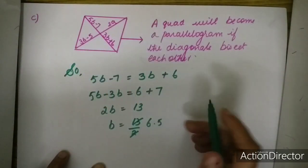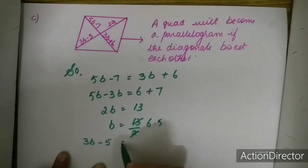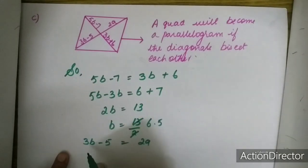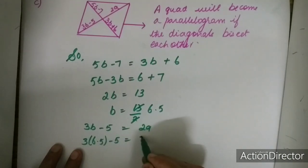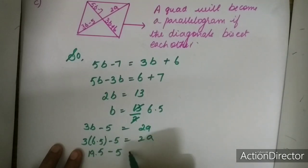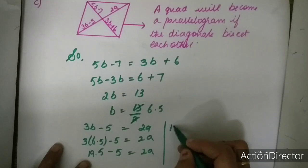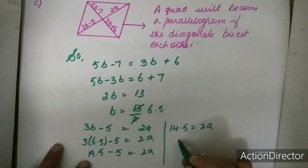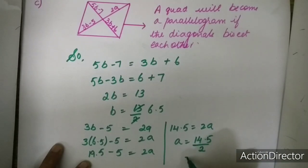Now, for finding the value of A, we will be writing 3B minus 5 is equal to 2A. We can replace the value of B here. So 3 into 6.5 minus 5 is equal to 2A. 19.5 minus 5 is equal to 2A, or 14.5 is equal to 2A, or A is equal to 14.5 upon 2, which is equal to 7.25.